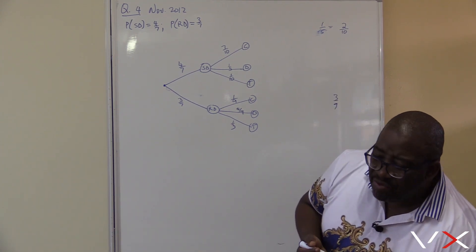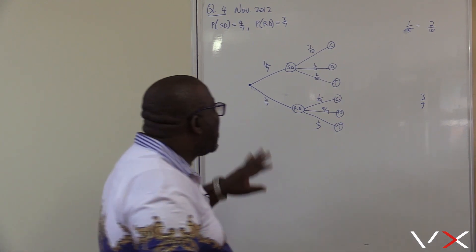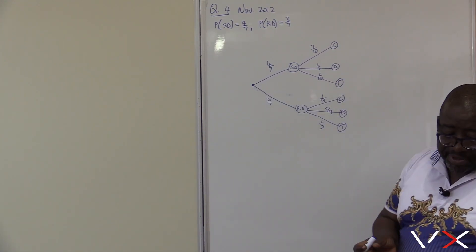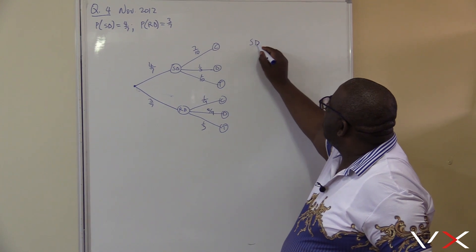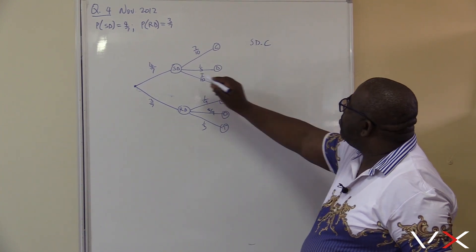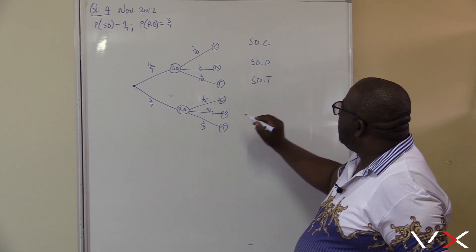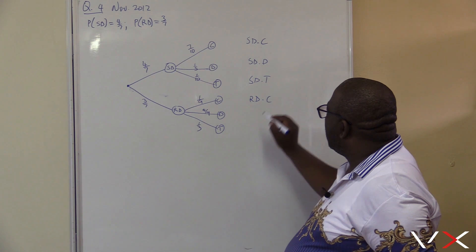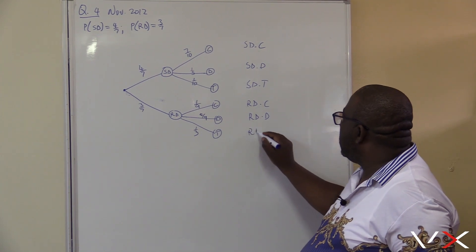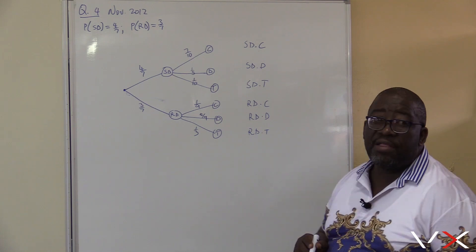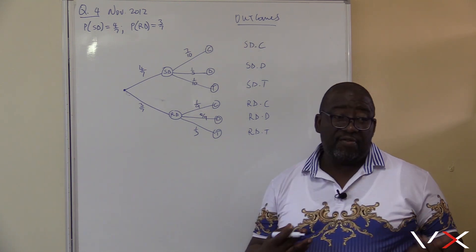What we've done here is complete our tree diagram. In most cases, we'll be required to write the outcomes after we have the tree diagram. The outcomes are: sunny day cycles, sunny day drives, sunny day takes a train, rainy day cycles, rainy day drives to work, and on a rainy day Vosi takes a train. These are the outcomes — you indicate that you are dealing with outcomes.